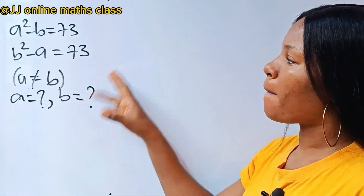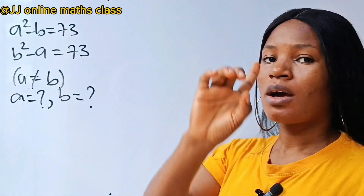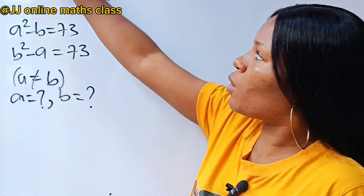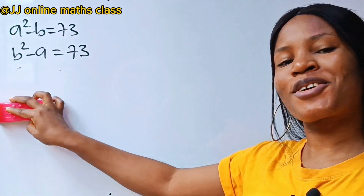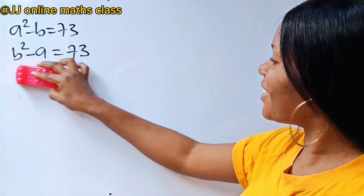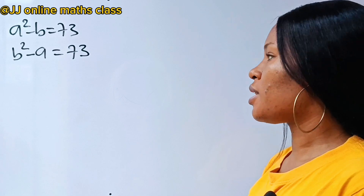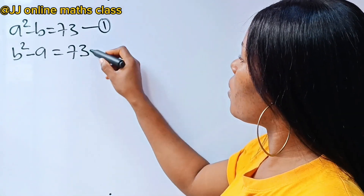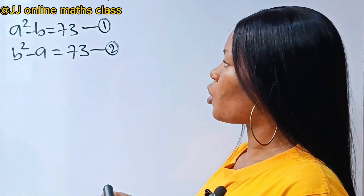Let's solve for the value of a and b in this particular equation with the condition that a is not equal to b. Let's call this our equation 1 and this our equation 2.